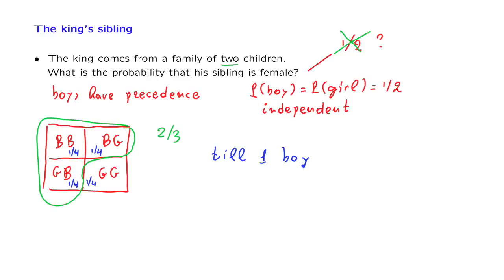They decided to have children until they get one boy. What does this tell us? Well, since they had two children, this tells us something, that the first child was a girl.